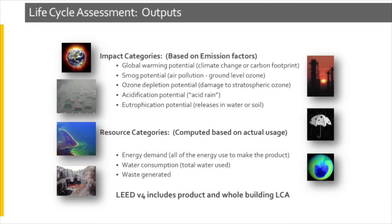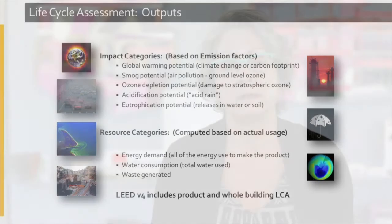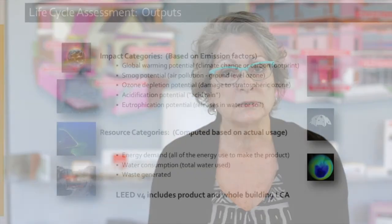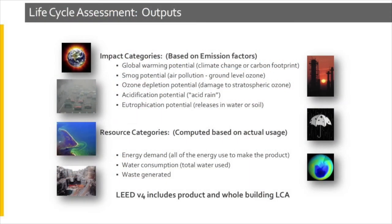Life cycle assessments look at several different impacts — most notably greenhouse gas emissions for global warming, but also looking at the emissions that contribute to smog, ozone depletion, and eutrophication, which is the deterioration of water systems. Acid rain is another one that is measured. These impacts can actually be measured and associated with that product as part of its footprint.